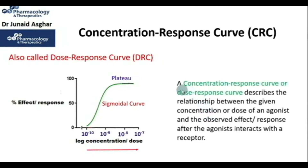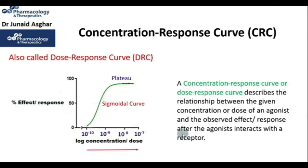You may define the concentration response curve or dose response curve as the relationship between the given concentration or dose of an agonist and the observed effect or response after the agonist interacts with the receptor.